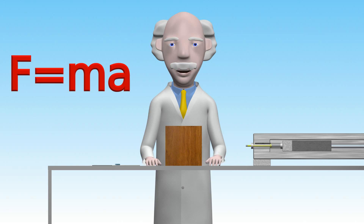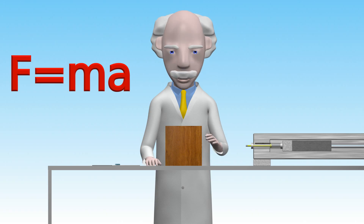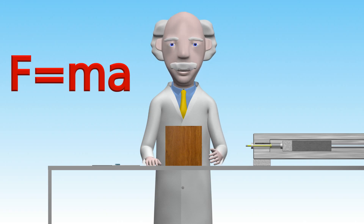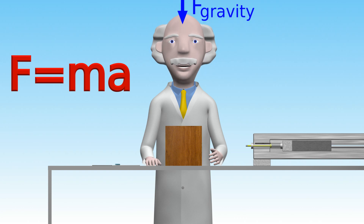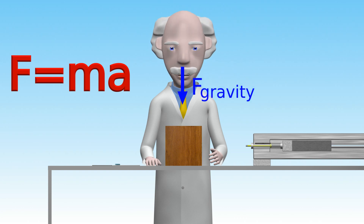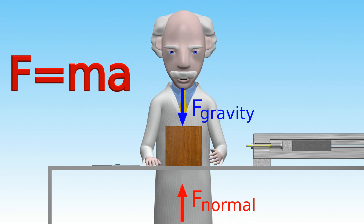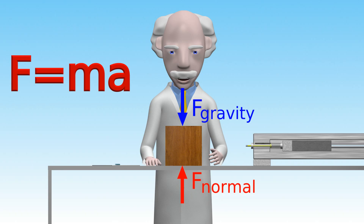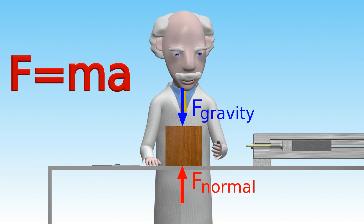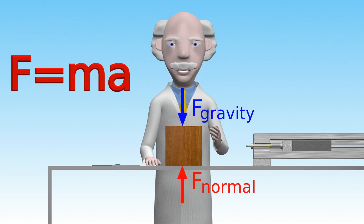For example, let's look at the forces in the vertical direction on this block. We have the gravity force and the force from the table onto the block. These are in balance and therefore the net force on the block in the vertical direction is zero.